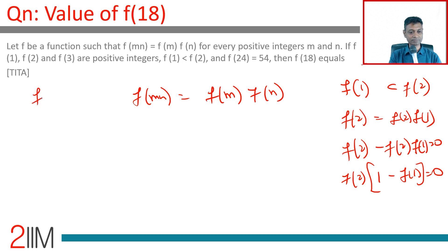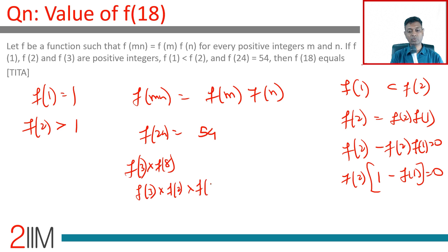f(2) is greater than 1, and it's a positive integer greater than 1. f(24) is 54. This is f(3) into f(8), or f(3) into f(2) into f(4).